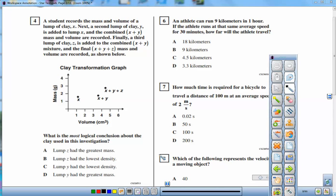This is number four on the California State Standards Star Test review. A student records the mass and volume of a lump of clay, x, and then you add a second lump of clay, y, to lump x, and graph its mass and volume.